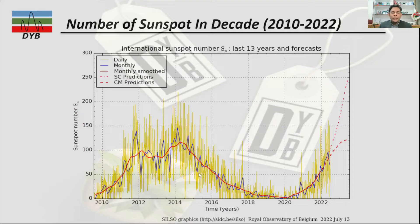Looking at more recent data from 2010 to 2022, you can see that between 2010 and 2020 the higher sunspot activity occurred around 2014 to 2015.